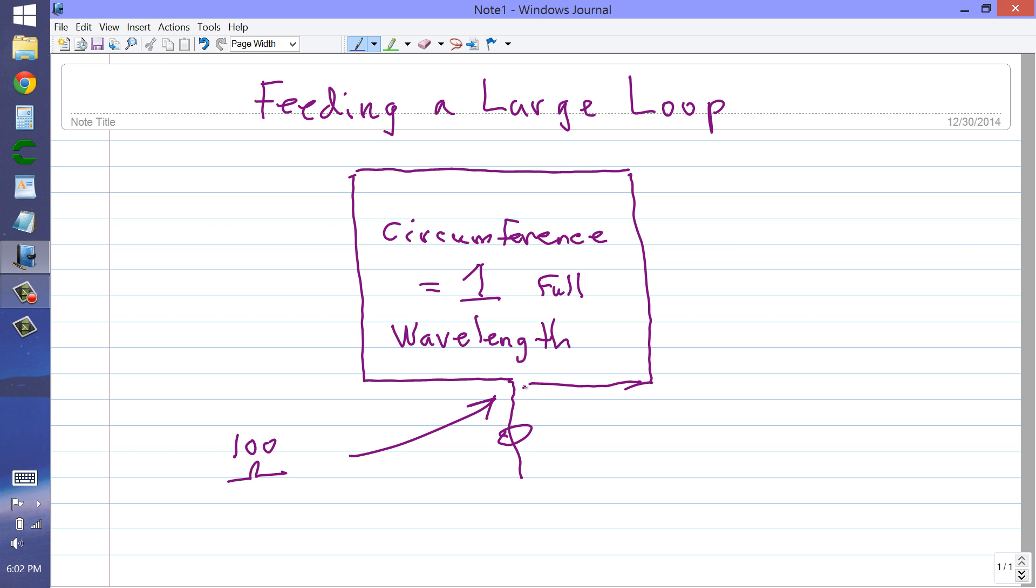Normally coaxial cable is 50 ohm line. So you're going to have a SWR of 2 to 1. And you're also going to have a balanced antenna and an unbalanced line. Those are imperfections in the system but they don't necessarily mean that you have to do anything about them.